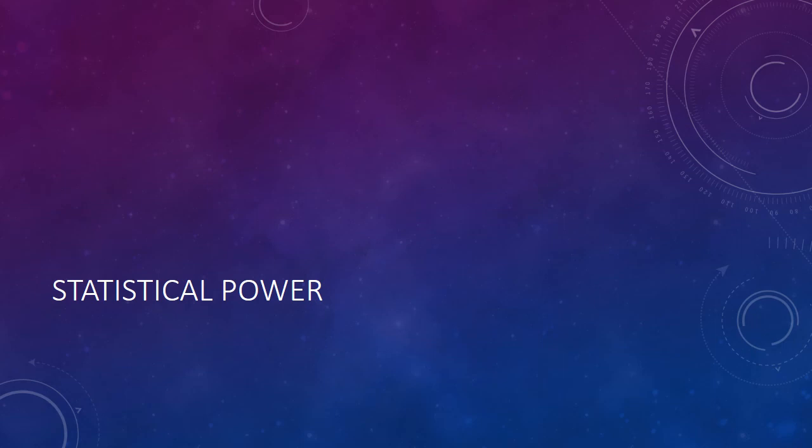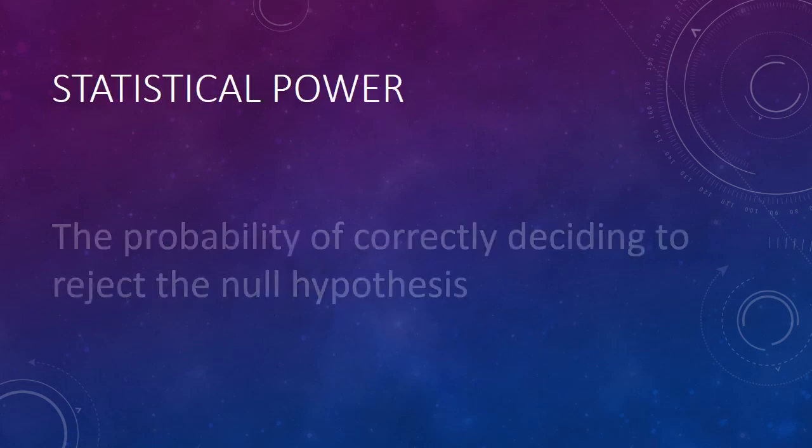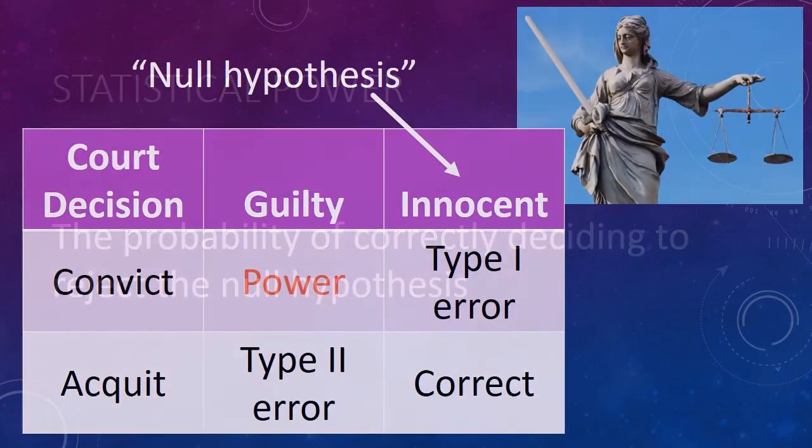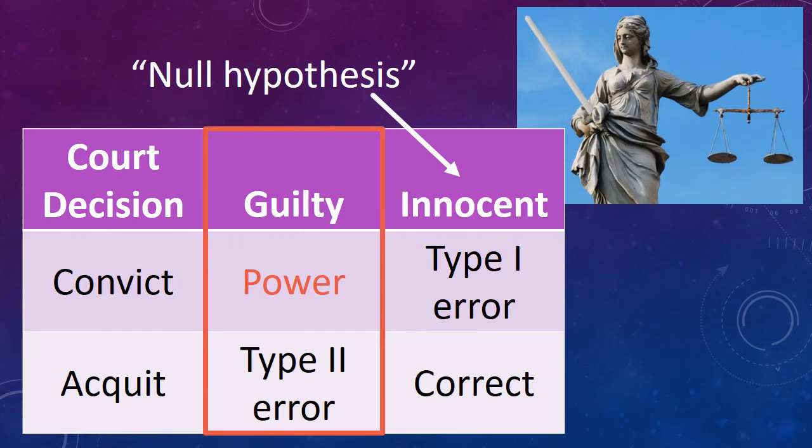But that's a rather negative view on the world now, isn't it? Instead of thinking about how often we make a mistake, we can think about how likely we are to get the answer correct. This is called statistical power. Statistical power is the probability of correctly deciding to reject the null hypothesis, or put another way, the probability of correctly deciding to accept the alternative hypothesis. Statistical power is the opposite of Type II error. If the defendant really is guilty, statistical power is how often the courts will get it right and send him to jail.